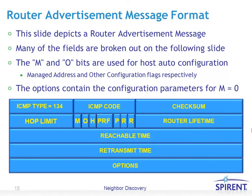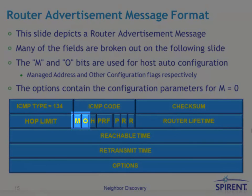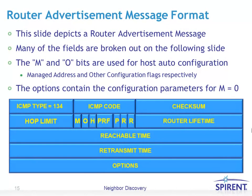Router advertisements play a big part of IPv6 protocol operation. Two very important bits — the M bit for managed and the O bit for other configuration — are flags used for host auto-configuration. If the M bit is set, it means stateful address configuration: you should use a DHCPv6 server instead of the router advertisement to configure your IPv6 address. If the M bit is not set, you use the router advertisement directly to get your prefix. The O flag means that even though you're using the router advertisement for your IP address, you'll still use a DHCPv6 server for other information such as DNS servers.